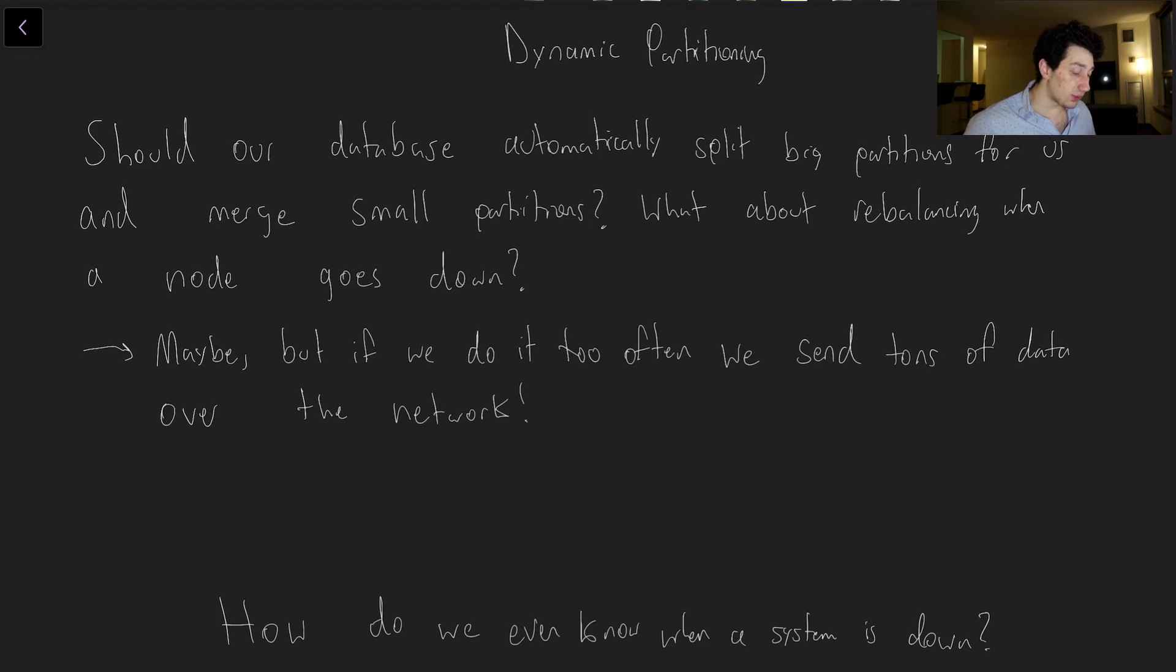However, this does run a risk, which is that if you do it too often—as in, let's say you rebalance when you don't necessarily need to, the nodes are just fine, but maybe you accidentally think one is down—well then all of a sudden we start sending a bunch of rows of our data over the network and we don't need to, and we're actually putting a greater cost on our system in order to do that. And so I guess the question then kind of becomes, well how do we even know when our system is down? How can we agree upon this type of thing? And of course, what do we do about it?